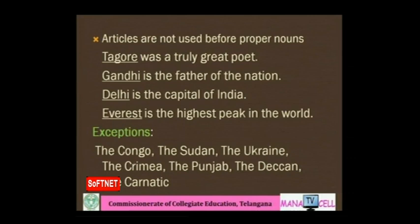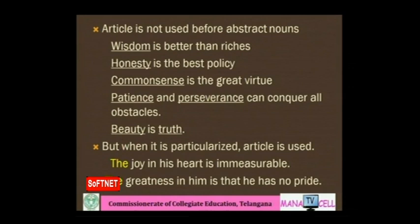Articles are not used before proper nouns: 'Tagore was a truly great poet. Gandhi is the father of the nation. Delhi is the capital of India. Everest is the highest peak in the world.' But there are exceptions — the Congo, the Sudan, the Ukraine, the Crimea, the Punjab, the Deccan, the Carnatic. For example, 'Punjab' means 'five rivers' and is a descriptive noun, so 'the' is used before it.